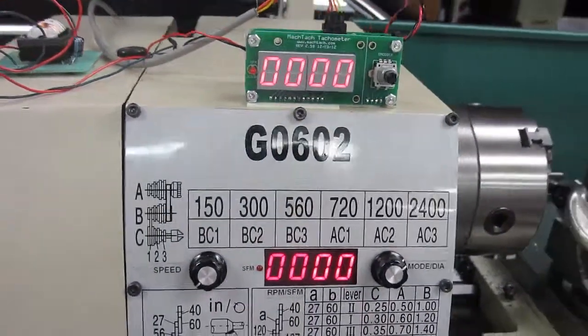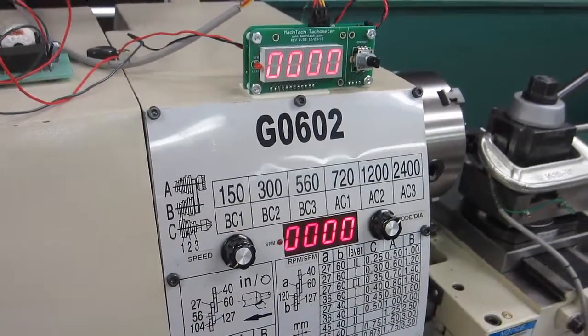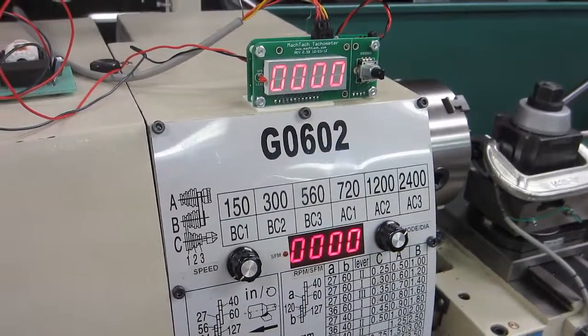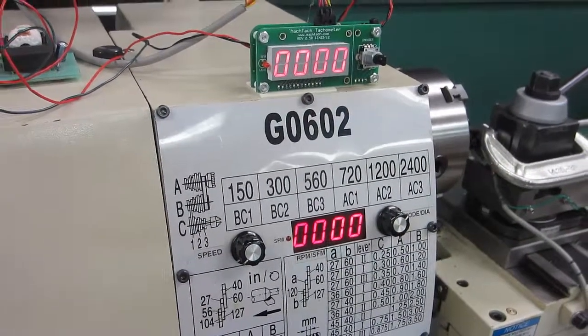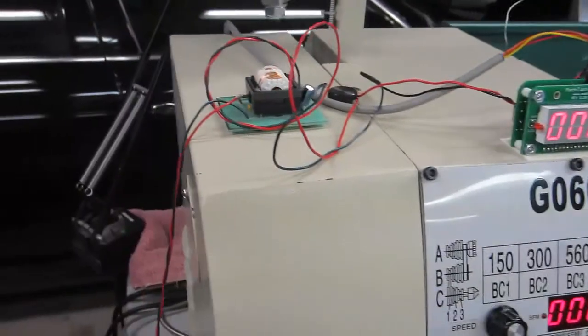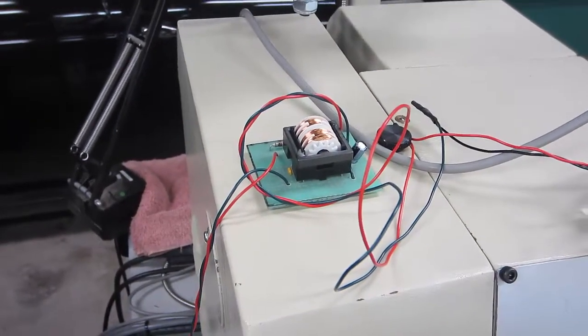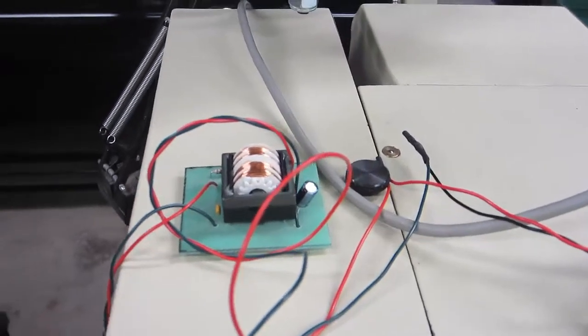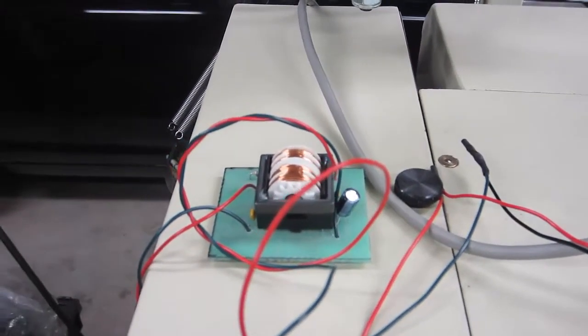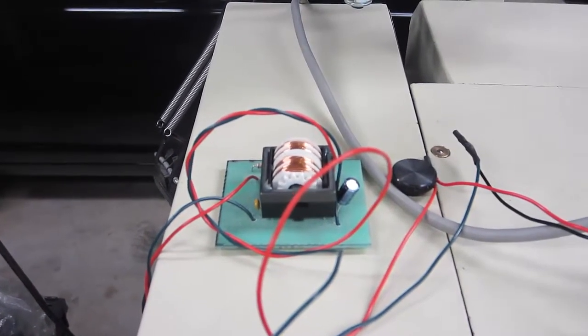So we've got two MacTacs here. One of them is the one that's installed in my lathe and then the one on top is the customer's MacTac. He was having problems with it having an erratic display. So we've got a little filter here that we put on it. This is a filter that we sell on the MacTac website. And he added an electrolytic capacitor in addition to the two ceramic ones. I'm not sure if that actually made any difference.